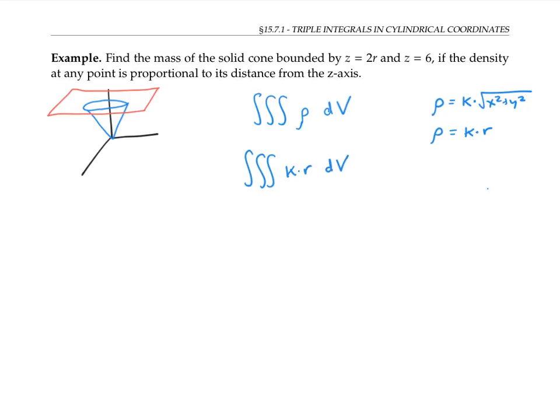We need to find the bounds of integration. And we also need to write dV in terms of dr dθ dz. Recall that in polar coordinates, the area element dA was equal to r dr dθ. So in cylindrical coordinates dV is going to be equal to r dr dθ dz.